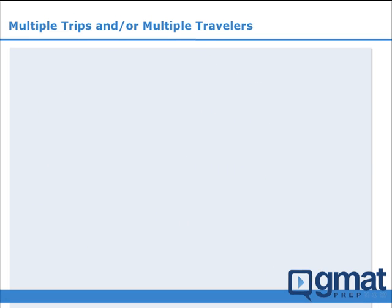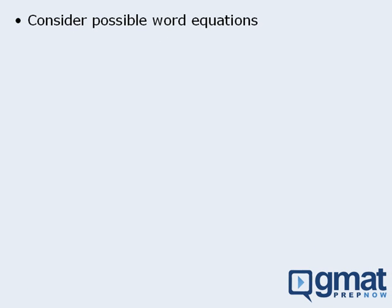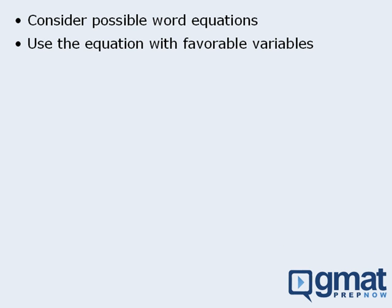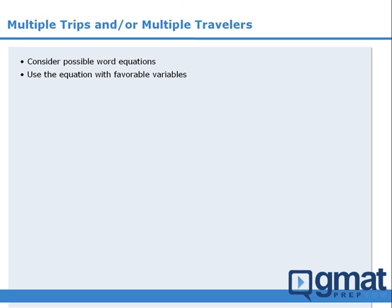In summary, when tackling motion questions involving multiple trips or multiple travelers, we should first consider what word equations we can write, then use the word equation that results in the most favorable variable — ideally, the variable we are trying to solve for.